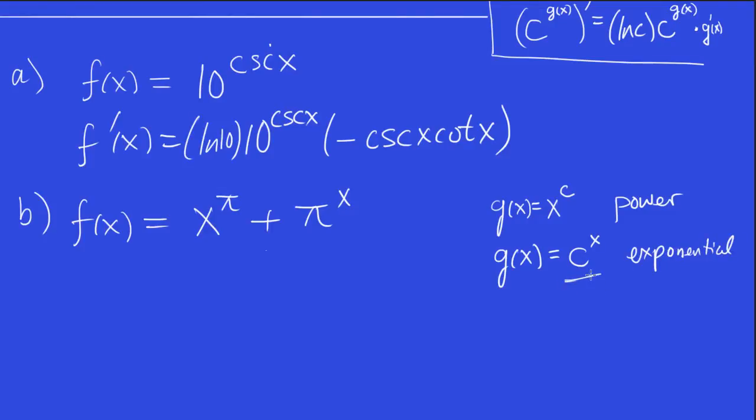This function grows much faster to infinity than this one does as x approaches infinity. So these are fundamentally different functions, and we know how to do the derivative of this one. The derivative of x to the c is c x to the c minus 1. So some students, when they approach this derivative, they think that you can do the same thing, and that's not true.